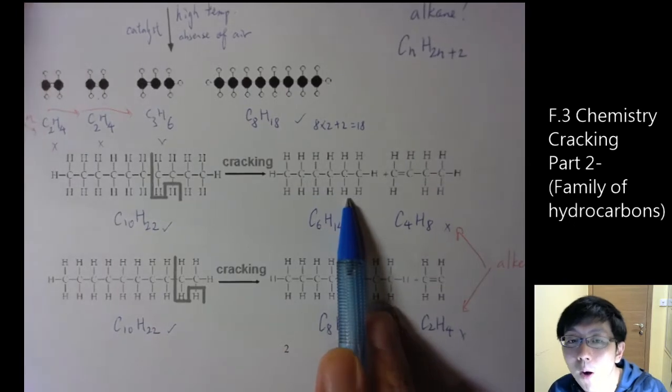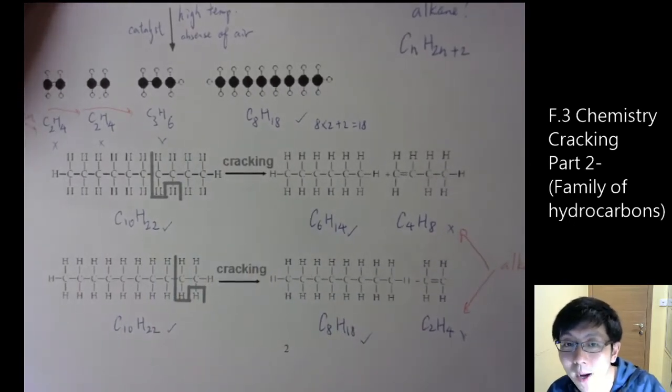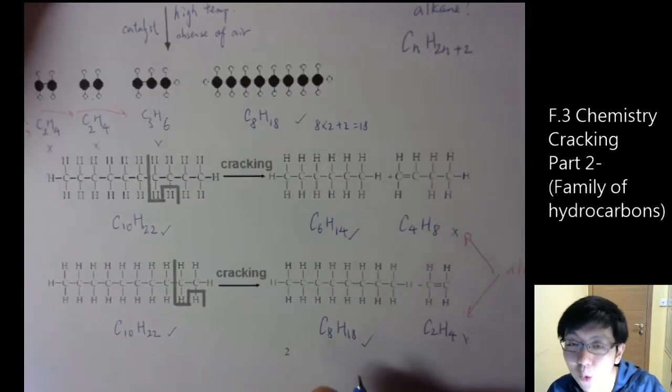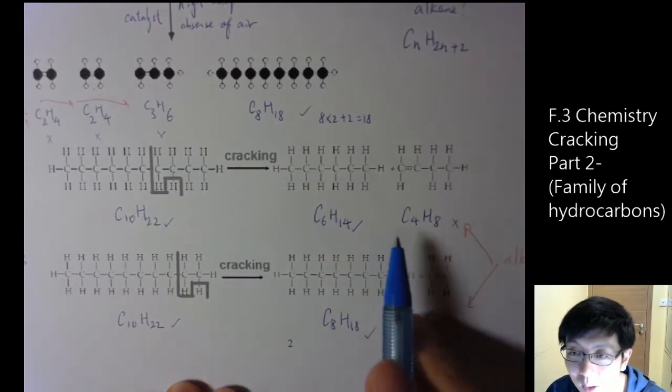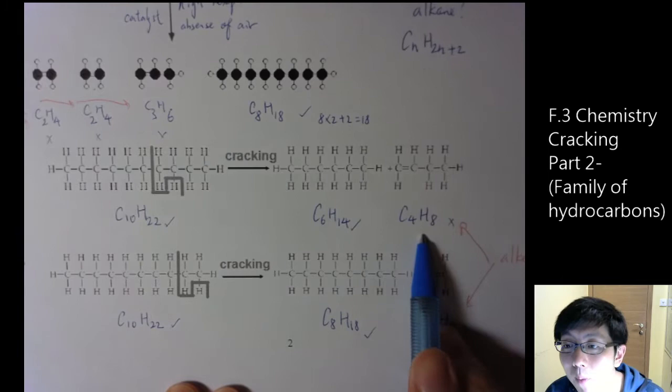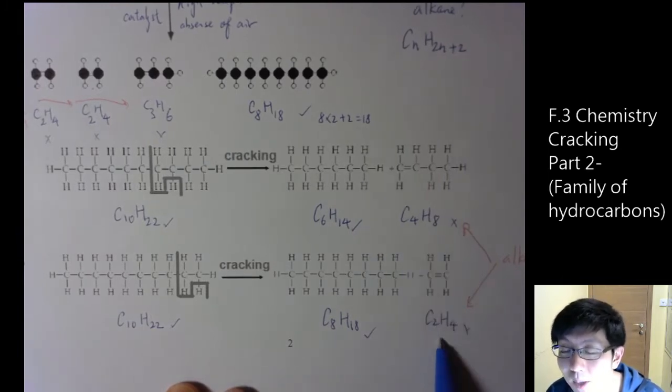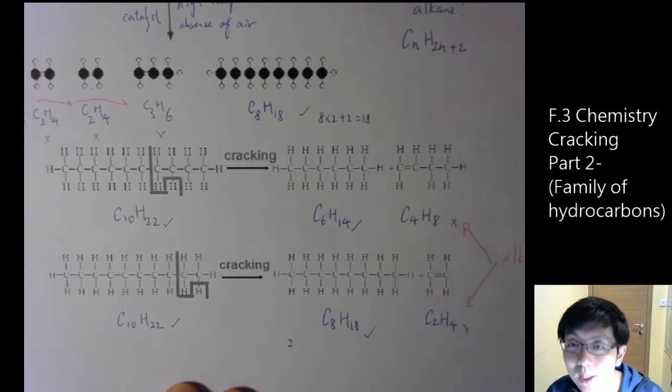However, for some reason in mathematics, which I may prove in the next video as an extra bonus part, there must be one type of hydrocarbon produced. There must be some alkenes being produced.